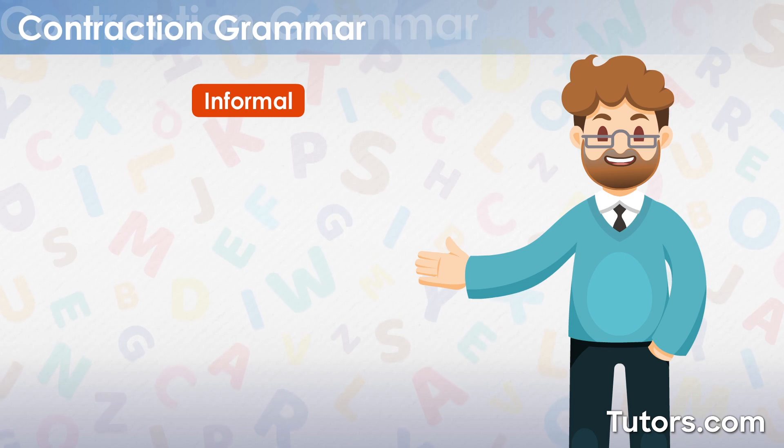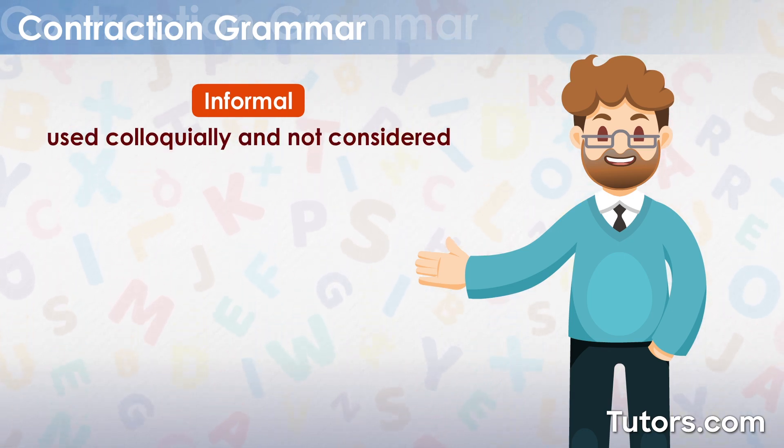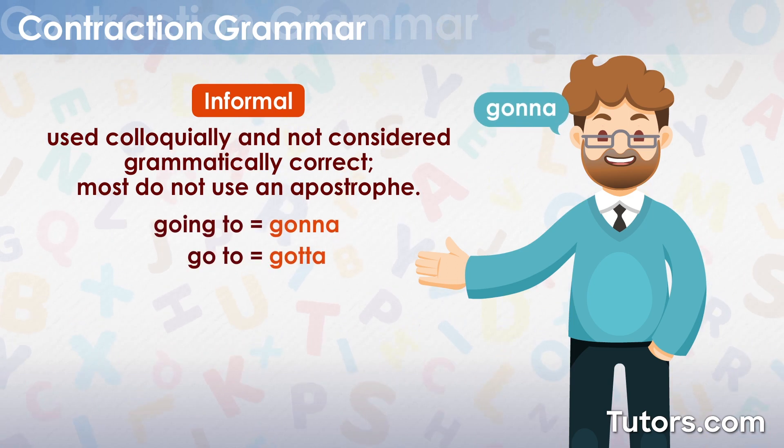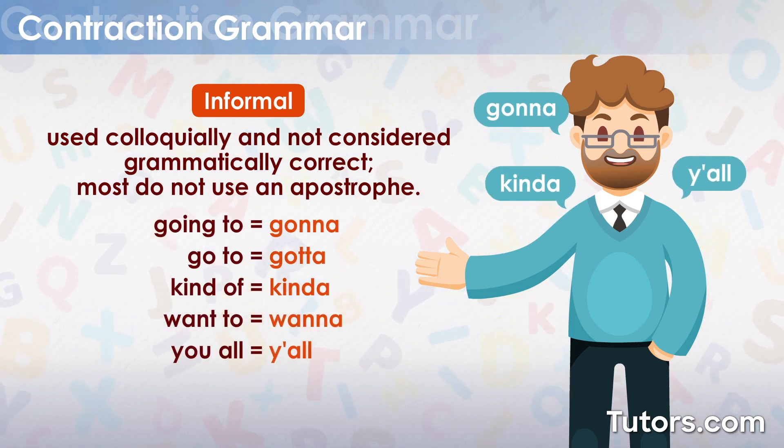Informal contractions are typically used colloquially and are not considered grammatically correct. Although some incorporate the use of an apostrophe, the majority do not, such as gonna, kinda, and y'all.